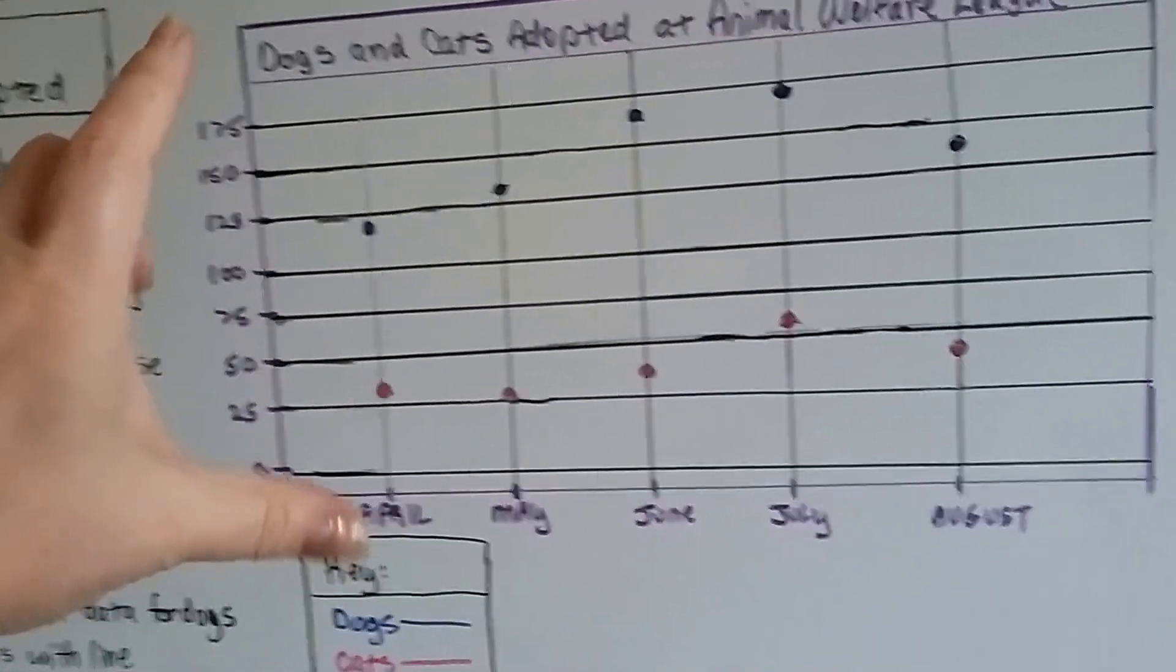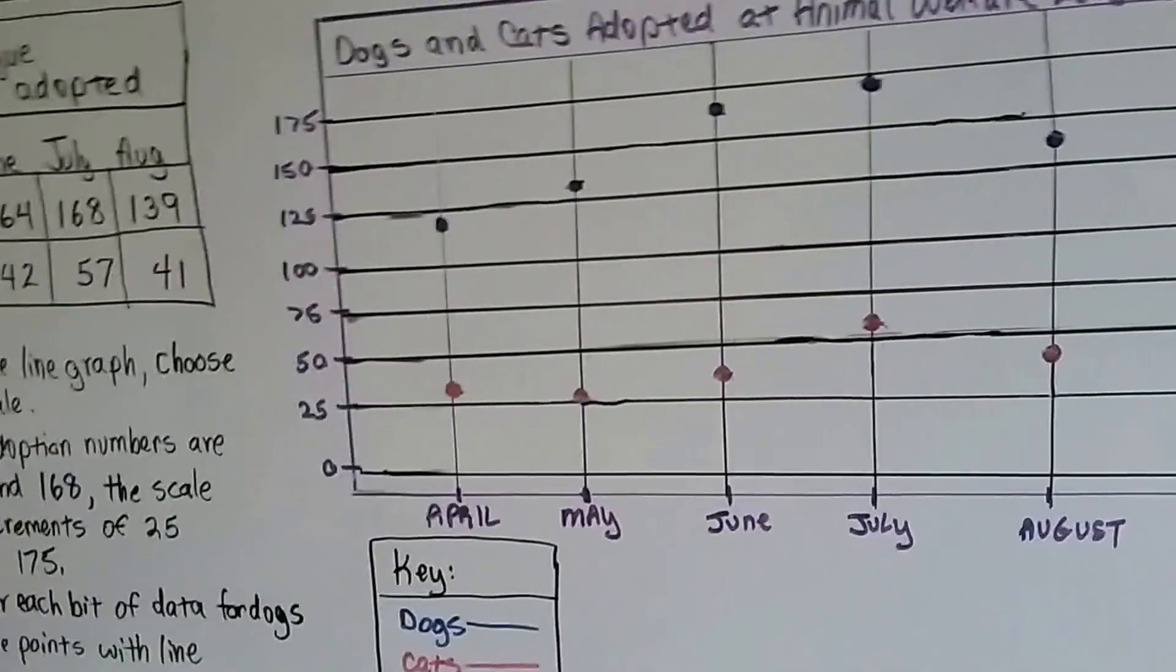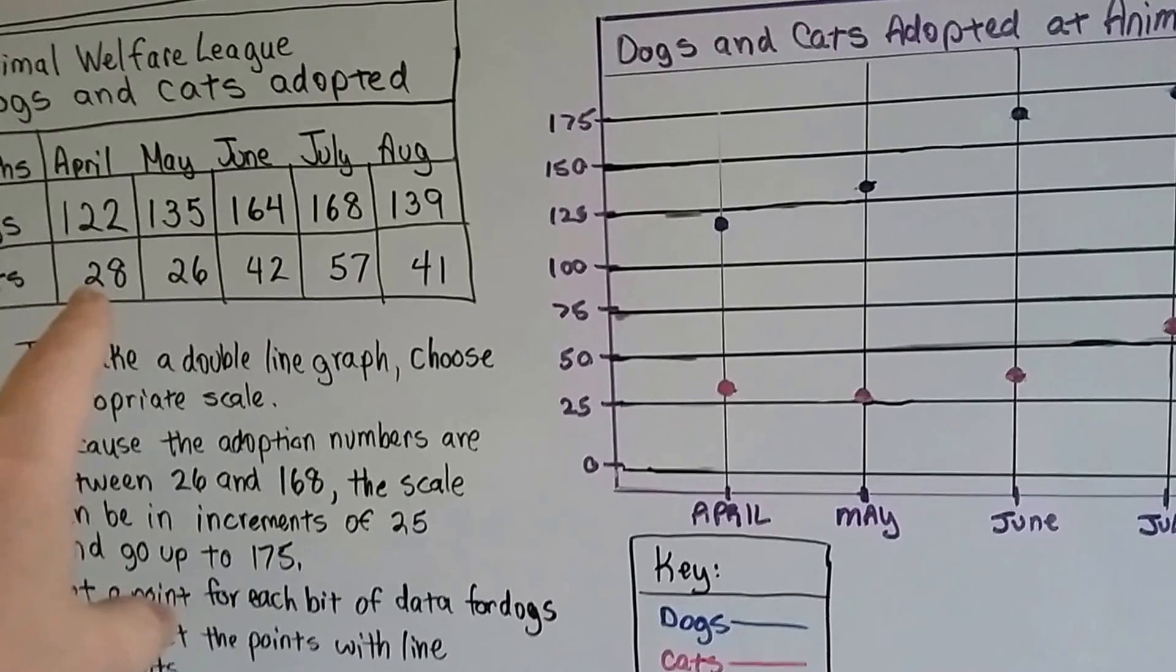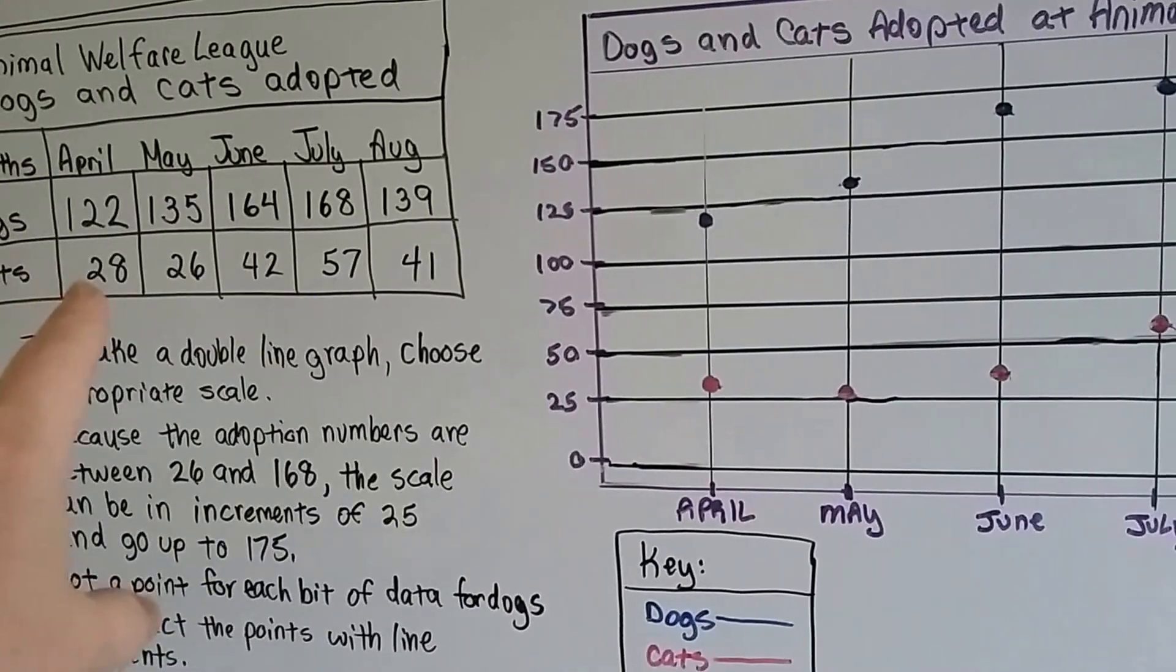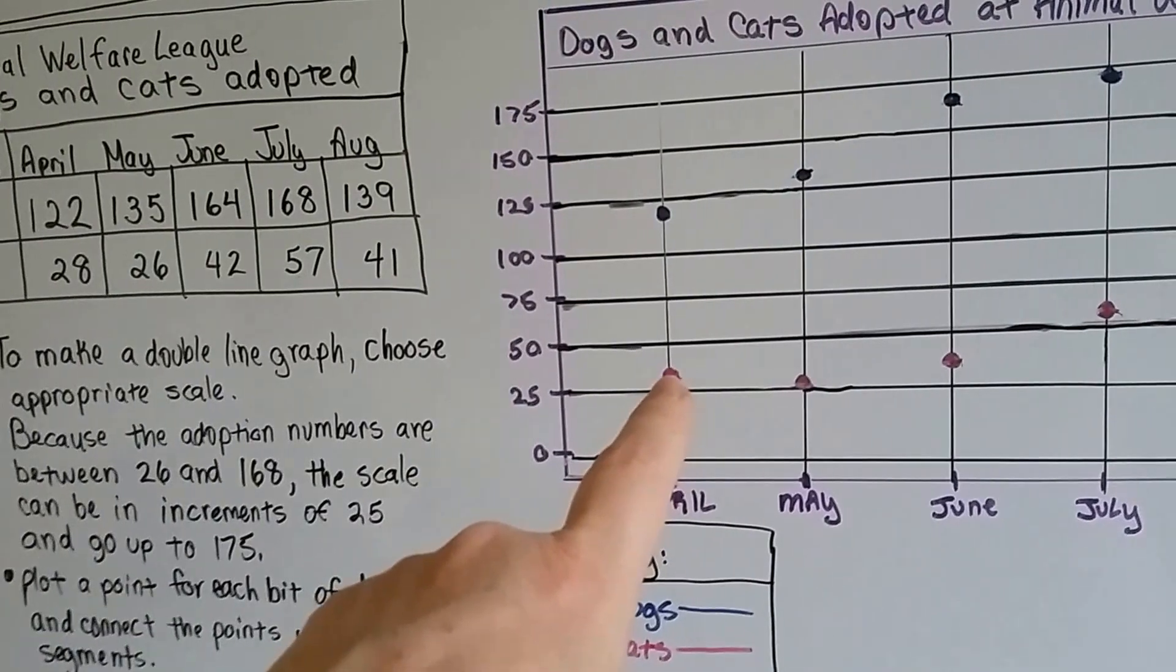Because the numbers were so varied, our scale would have been way too long if we included all the numbers. So we just did increments that would fit. Now cats are way lower. They don't adopt out as many cats as they'd like to. In April there was only 28, so we put it right above 25.